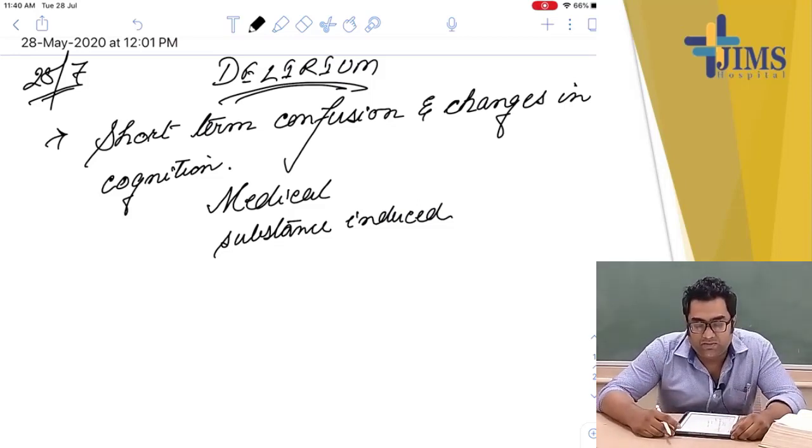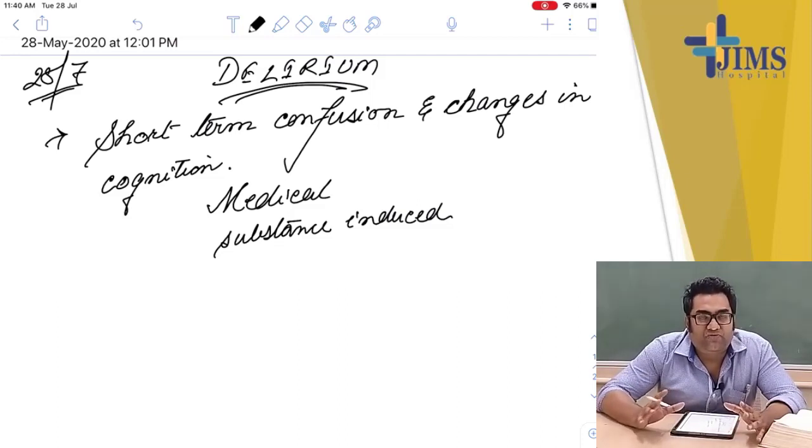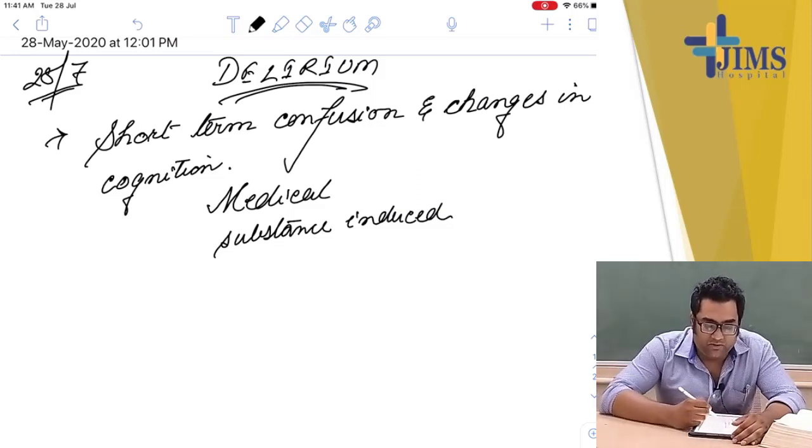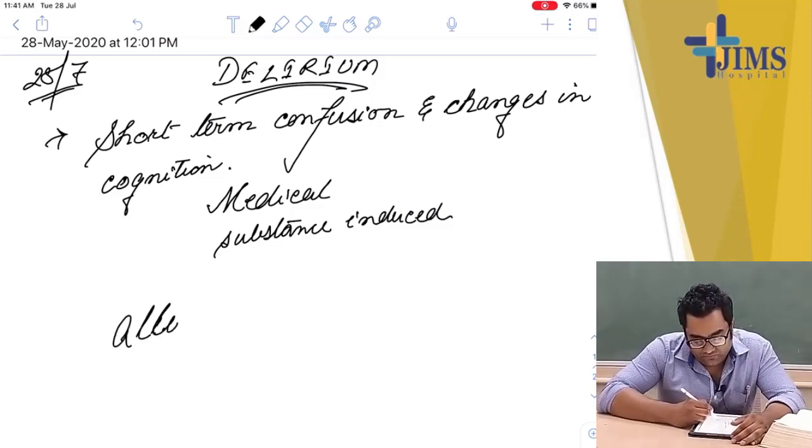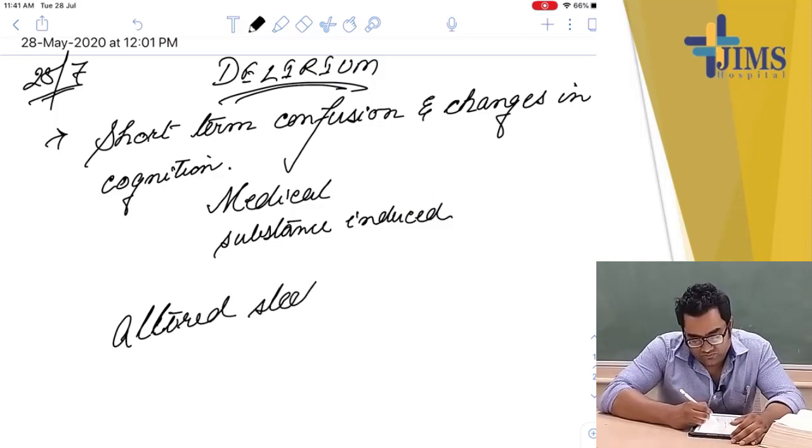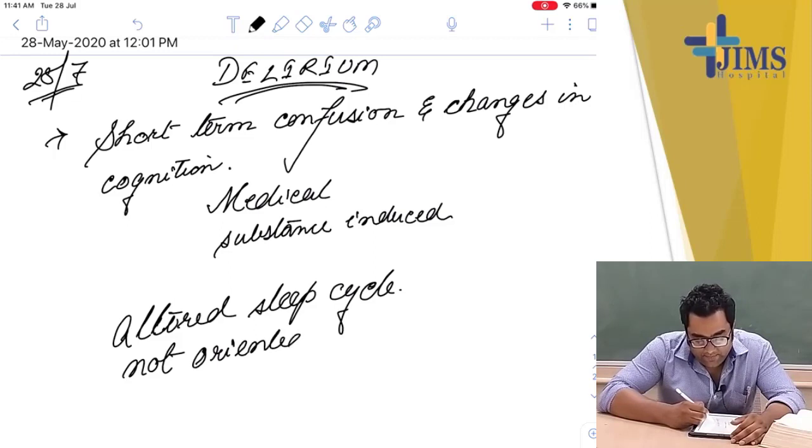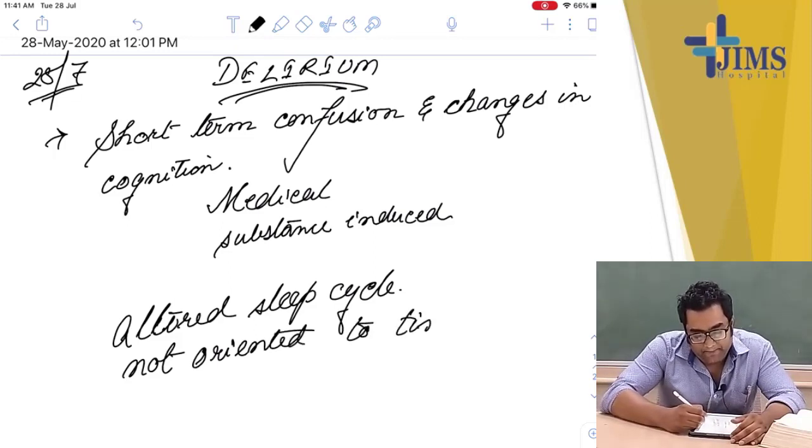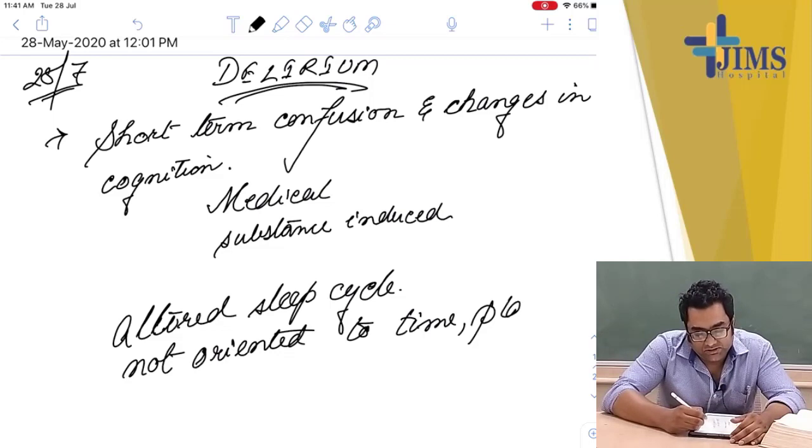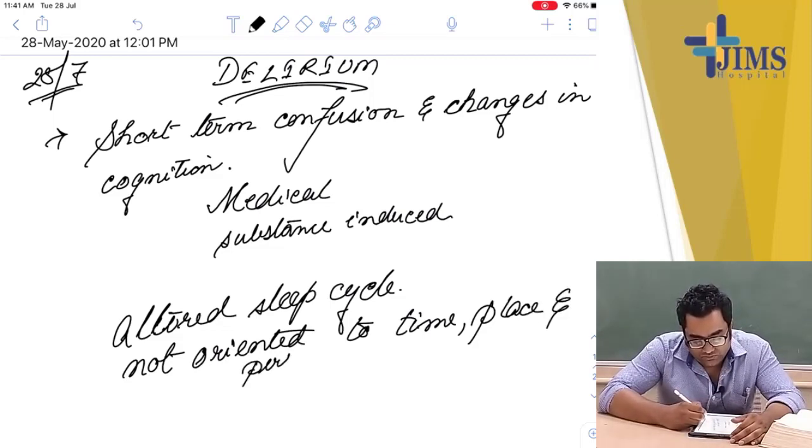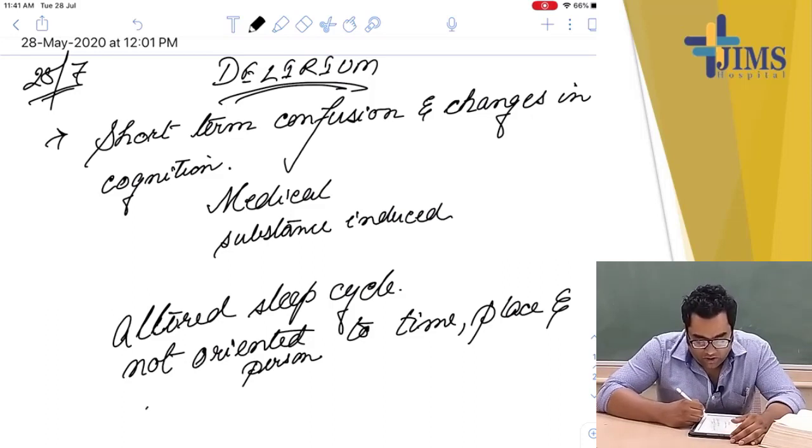What is delirium? Basically you will find the patient of delirium in the ICU setup or in a hospital. There is a short term confusion in cognition. Basically there will be altered sleep cycle, not oriented to time, place and person, and altered sensorium.